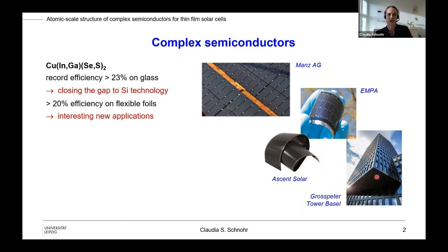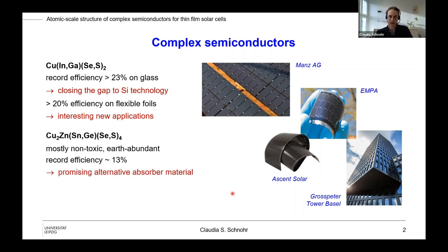Indium and gallium are considered critical raw materials, so people are looking for alternative absorber materials. That brings us to the other group of materials, the so-called castorites. One example is copper zinc tin germanium selenium sulfide. The main benefit is that most of these elements are non-toxic and earth abundant. The major drawback at the moment is the record efficiency, which is only around 13 percent. We would obviously need to improve this significantly to make this material technologically relevant, but it definitely is considered a promising alternative absorber material.